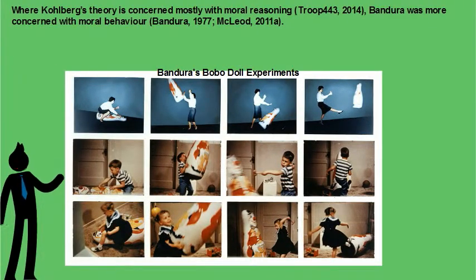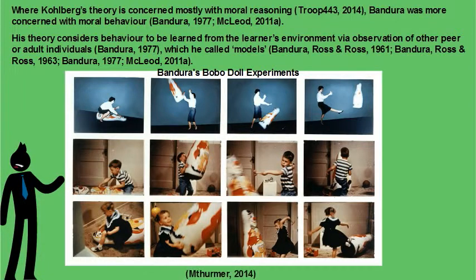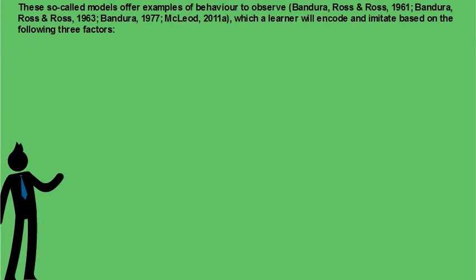Where Kohlberg's theory is concerned mostly with moral reasoning, Bandura was concerned with moral behavior. His theory considers behavior to be learned from the learner's environment via observation of other peer or adult individuals. These so-called models offer examples of behavior to observe, which a learner will encode and imitate based on the following three factors.